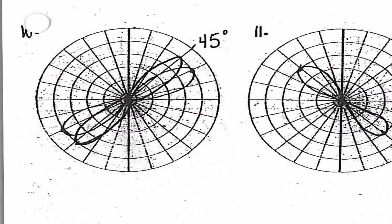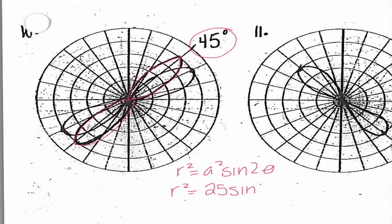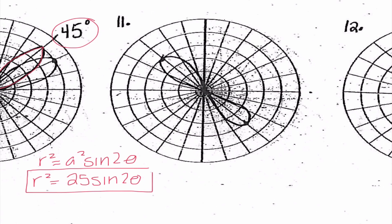Number ten — there was a slight mistake here but it got fixed, and it tells us the petal is at 45 degrees, which tells me it is r² equals a² sine 2θ. This petal is going out 1, 2, 3, 4, 5, so r² equals 25 sine 2θ. Number eleven — this time we're at negative 45 degrees, so that tells me it's negative a² sine 2θ. This graph goes out 1, 2, 3, 4, so it's going to be r² equals negative 16 sine 2θ.